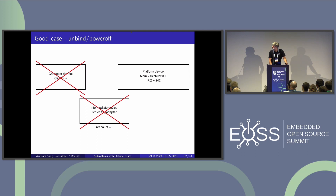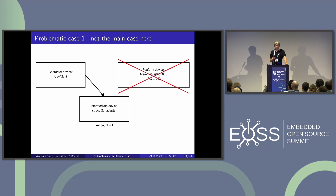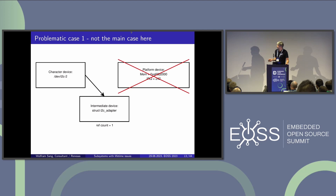But if the platform device goes away while the character device still holds a reference to the intermediate device, that's a whole set of problems. If you're not carefully checking pointers you might get null pointer dereferences, and even if you do check, you have to be careful not to run into races between the check and the platform device going away.